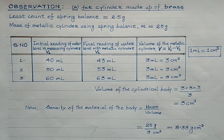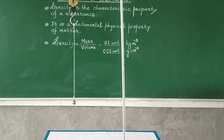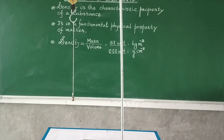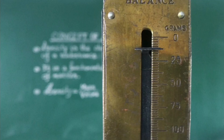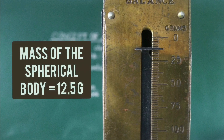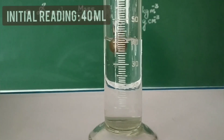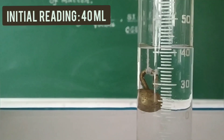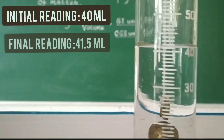The same procedure is to be followed for the spherical metallic body. We tie the spherical body and suspend it on the hook of the spring balance. The pointer lies between 0 and 25, giving 5 divisions. One division equals 2.5 grams, therefore 5 divisions equals 12.5 grams. So the mass of the spherical body in air is 12.5 grams. On suspending the spherical body in water, the level rises — the initial reading was 40 and the final meniscus is between the 41st and 42nd division, reading as 41.5 ml.